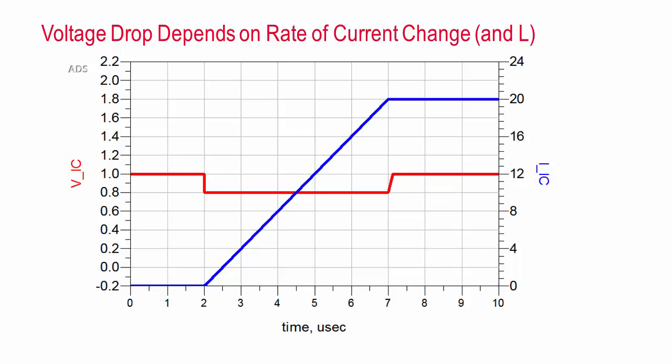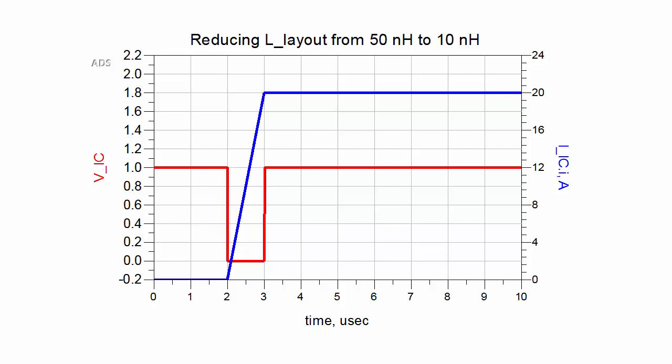But, if anything, there is a tendency to operate ICs with faster clocks, so slew rates are going to get faster over time, making this problem worse. A more realistic alternative would be to modify the layout to reduce the inductance.